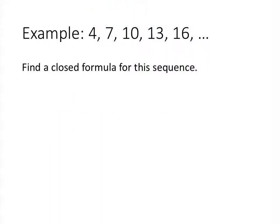Next, for the same sequence of numbers, we want to find a closed formula. Closed formulas can be a little bit trickier, but it helps to know the recursive definition. Remember, the recursive definition here is that we're adding 3 at each step. A good rule of thumb when finding a closed formula is to find a sequence that's similar, easier to think about, and has the same recursive relationship. So what would be an easier sequence to think about where we add 3 every step? That would be the multiples of 3.